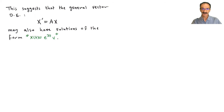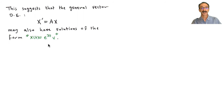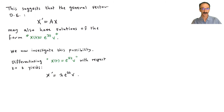This gives us an idea: think that the general solution to the differential equation x' = Ax may also have the same form. The solution for the whole system could be written as e^(λt) times v. Let's investigate that to see if it works.